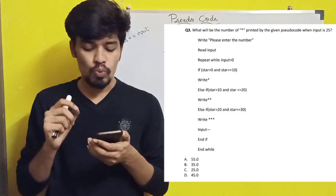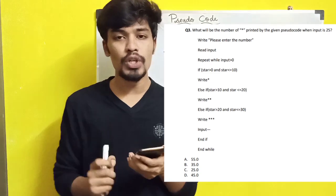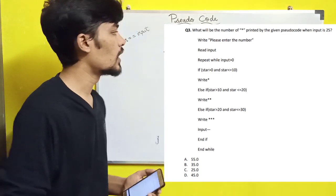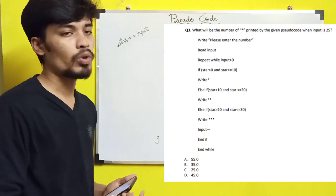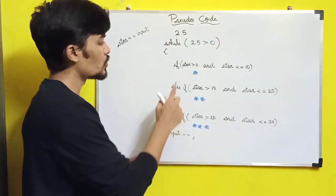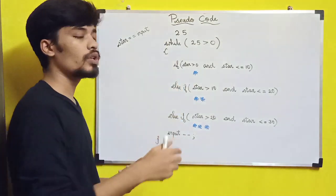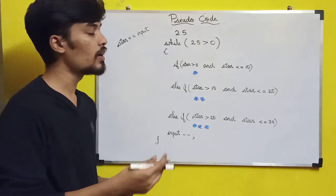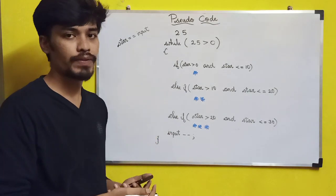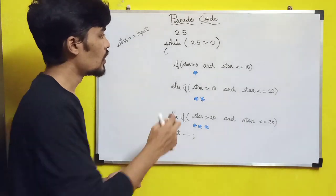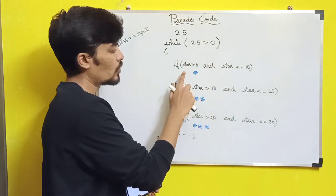Next question: What will be the number of stars printed by the given program? The input is 25. A while condition is given with an if-else statement. If the input is equal to a value, a star is printed. We consider the conditions as we move through. So 25 is greater than 0 — the if condition is satisfied.